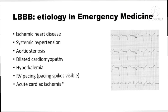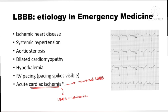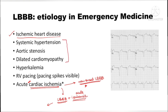What could lead to an LBBB? If you see any LBBB in the emergency department, first think about acute cardiac ischemia. Acute cardiac ischemia can cause a new onset LBBB, or a patient with baseline LBBB can develop ongoing ischemia. When you see a new onset LBBB in a patient whose prior ECG was normal, the alarm should go off for acute cardiac ischemia. Other causes include long-standing ischemic heart disease, systemic hypertension, dilated cardiomyopathy, and aortic stenosis — all of which can remodel the left ventricle and alter its conduction pathways, leading to an LBBB pattern.